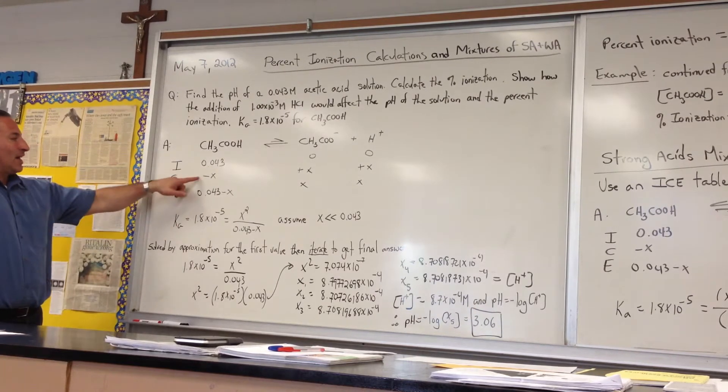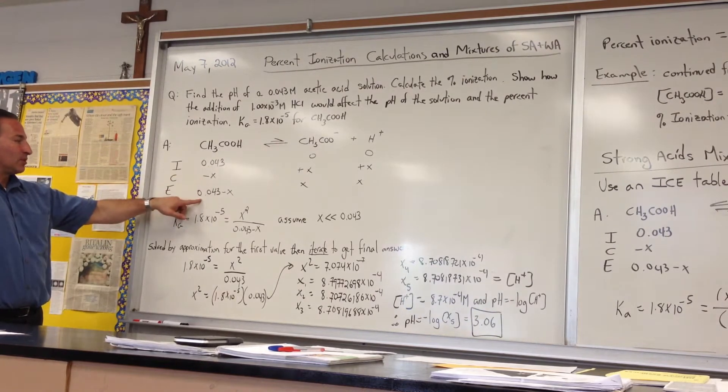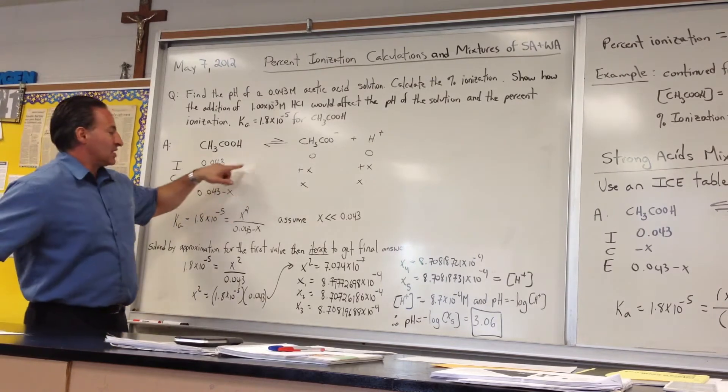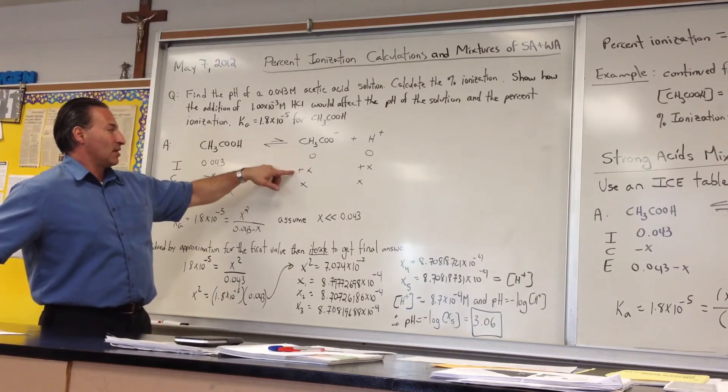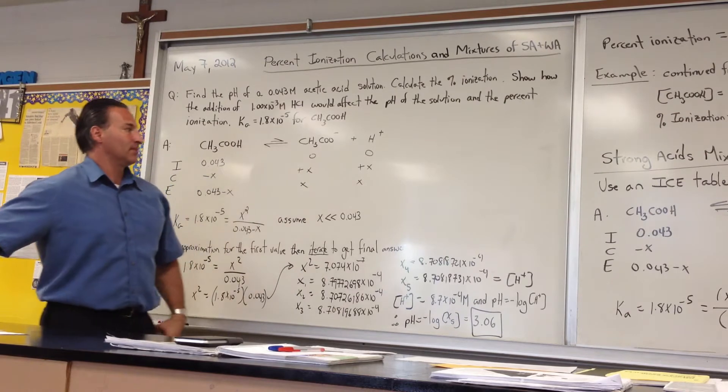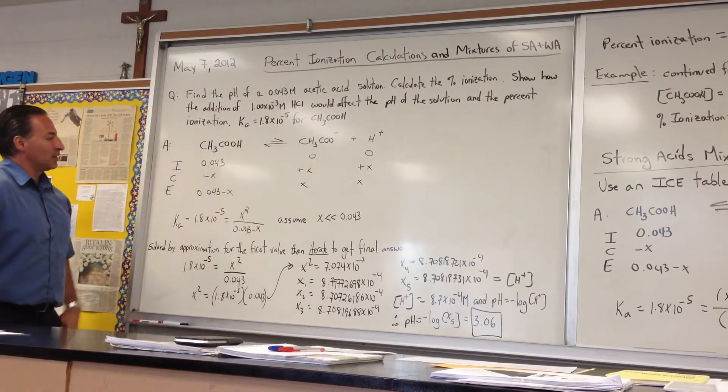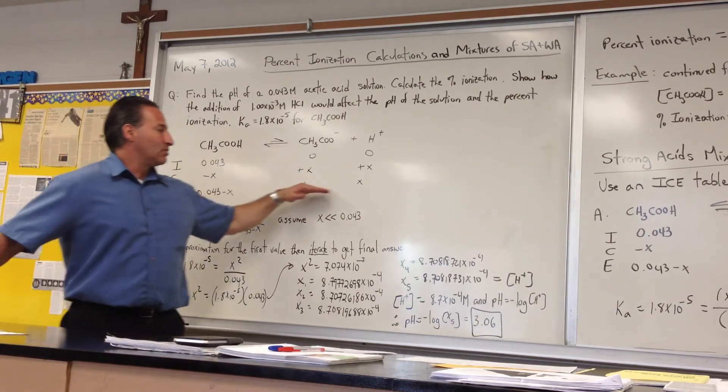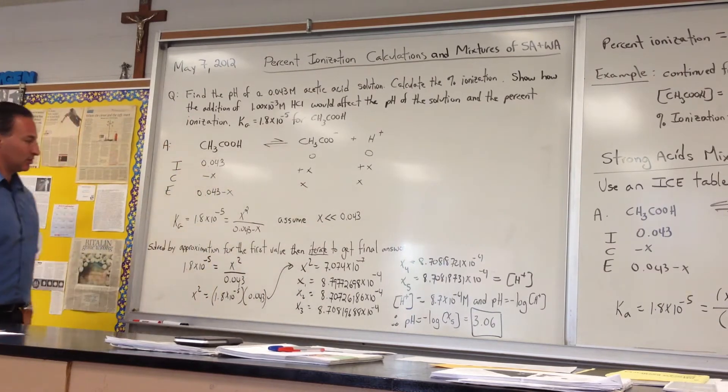Then a certain amount X dissolves, leaving you with 0.043 minus X. The same amount X of acetate ions will appear, and the same for hydrogen ions. So at equilibrium, you'll have these two values of X for the concentration of acetate and proton.